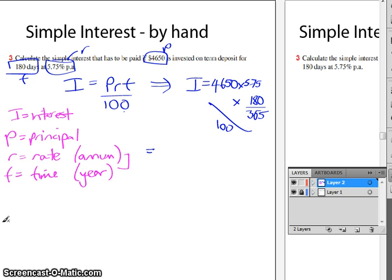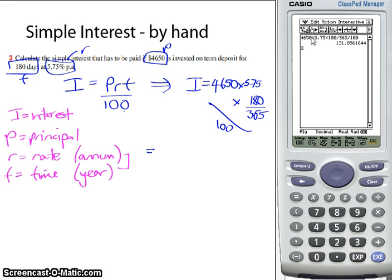So we've got the calculator here. So we type all that in. We've got 4,650 times the 5.75 times it by the fraction, which is 180 out of 365. And all of that is divided by 100. And we can see here the interest that we get.